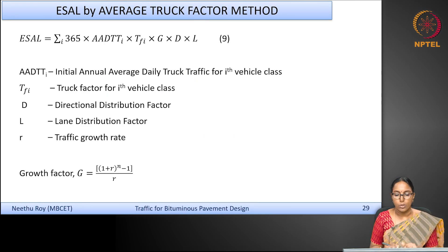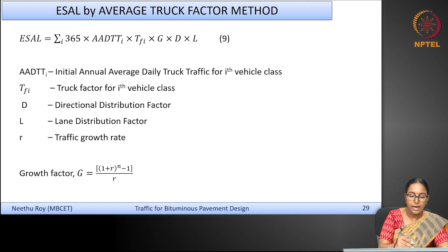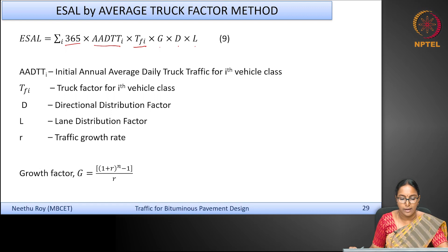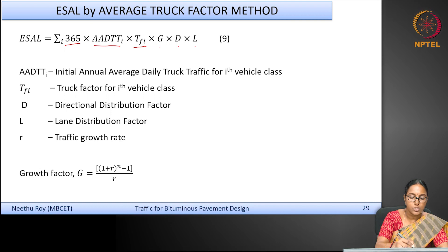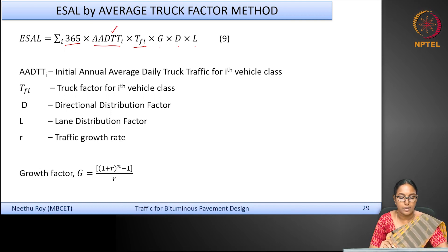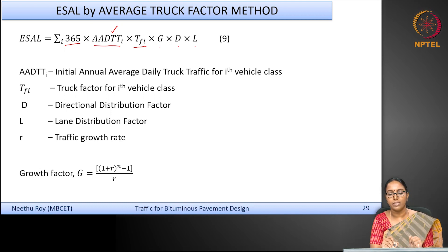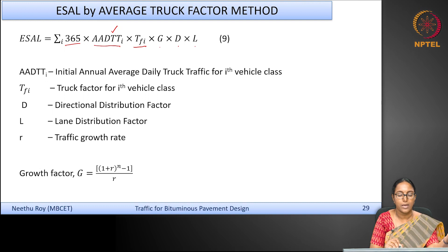Now let us see how to compute the total equivalent standard axles, or N-design — the design traffic. The formula is: AADTT_i multiplied by TF_i, multiplied by 365, then by G, D, and L to give the total ESALs. AADTT_i is the initial annual average daily truck traffic for the i-th vehicle class.